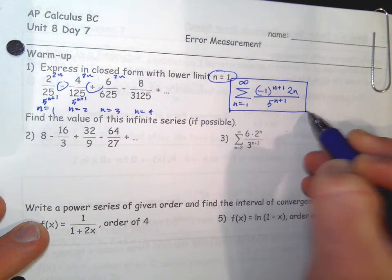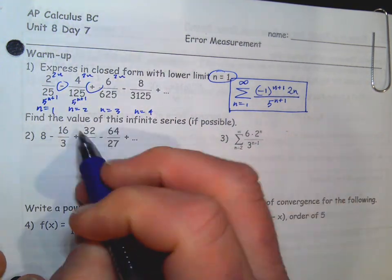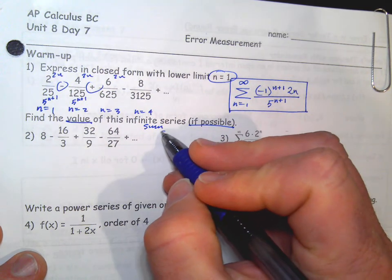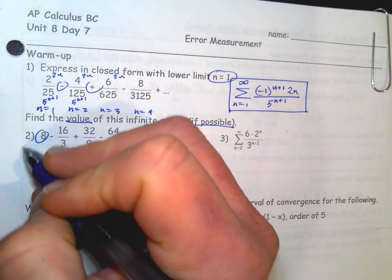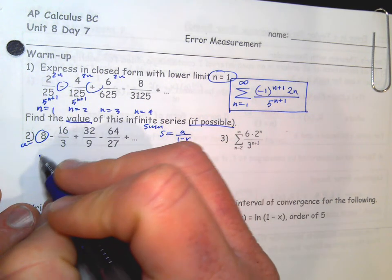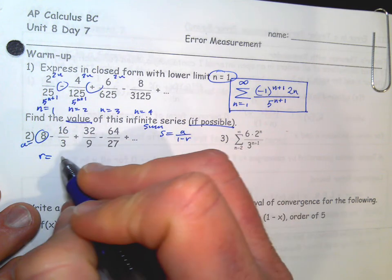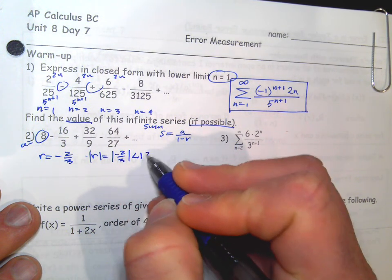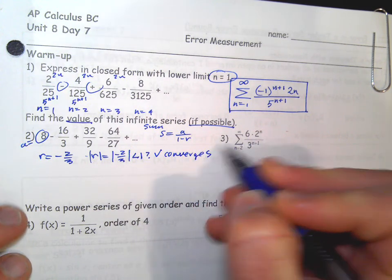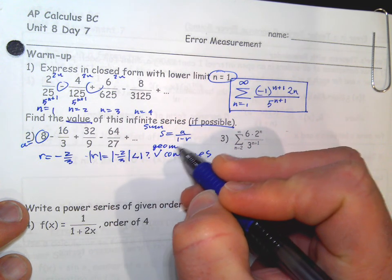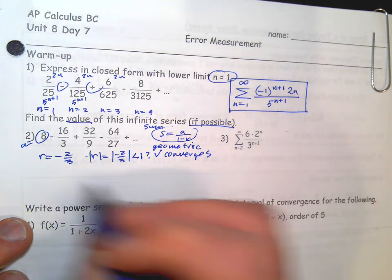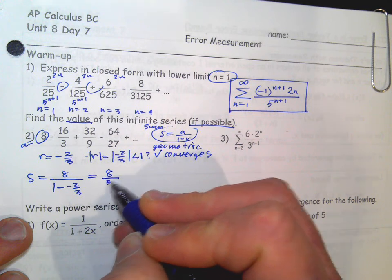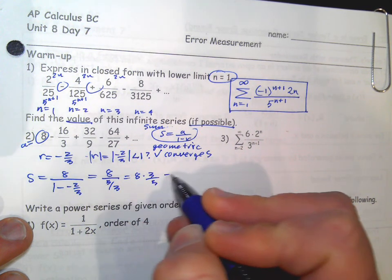This is not a geometric series. Next one: find the value of this infinite series, if possible. The value is the sum, and if it's a geometric series, it'll be a over 1 minus r. So the a value is obvious. For r — are we multiplying by the same thing? It's negative 2 thirds. The absolute value of r is less than 1, so it converges. The sum equals 8 over 1 minus negative 2 thirds, which is 8 over 5 thirds, so 8 times 3 fifths, giving us 24 fifths.